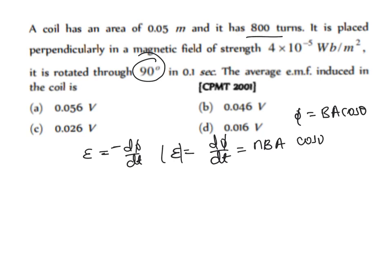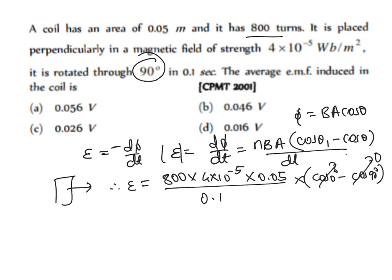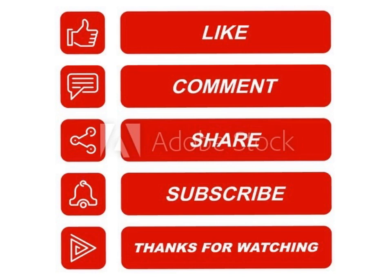Using the formula: induced EMF = N × B × A × (cos θ₁ − cos θ₂) / dt = 800 × (4 × 10⁻⁵) × 0.05 × (cos 0° − cos 90°) / 0.1 = 800 × 4 × 10⁻⁵ × 0.05 × 1 / 0.1 = 0.016 volt. So option D is the right answer for this question.